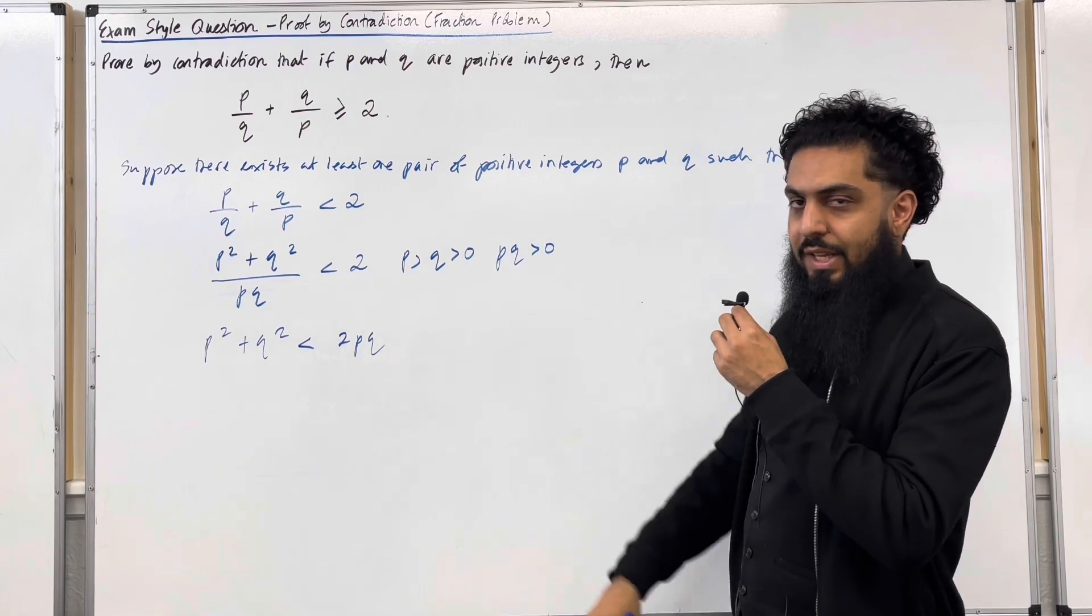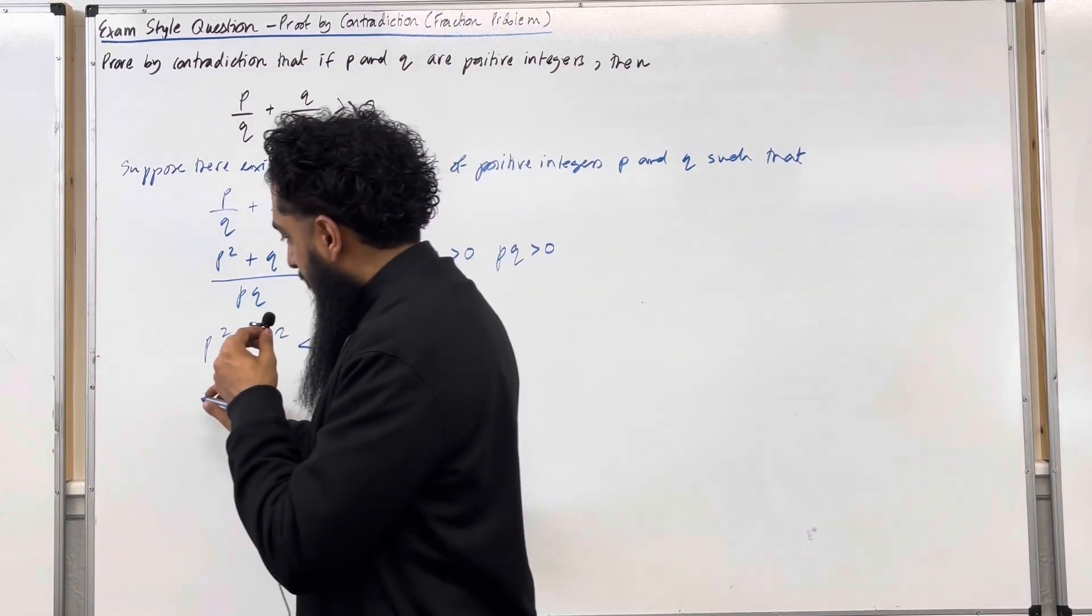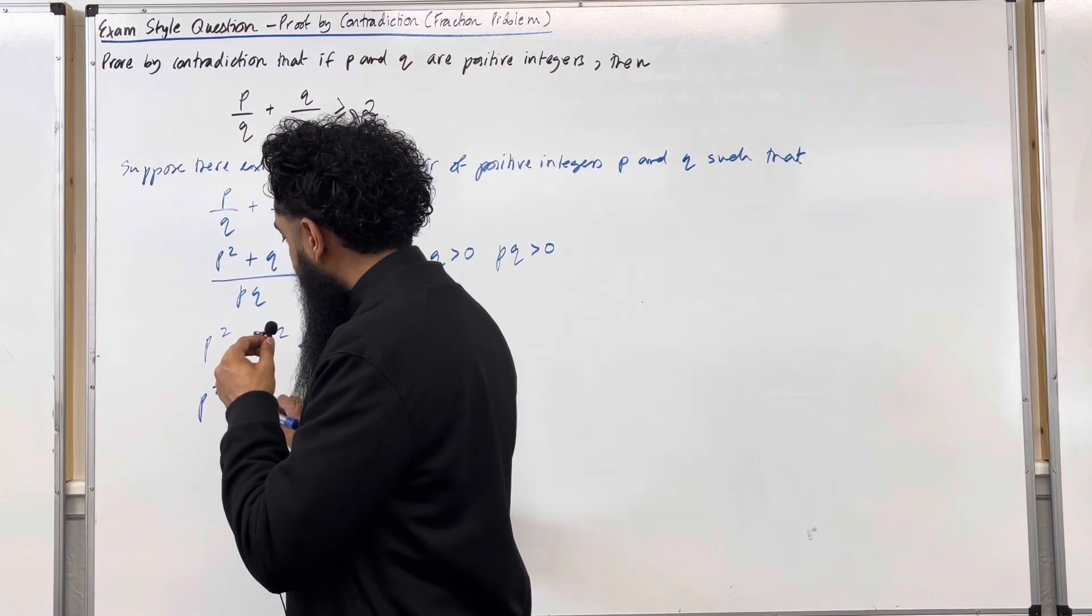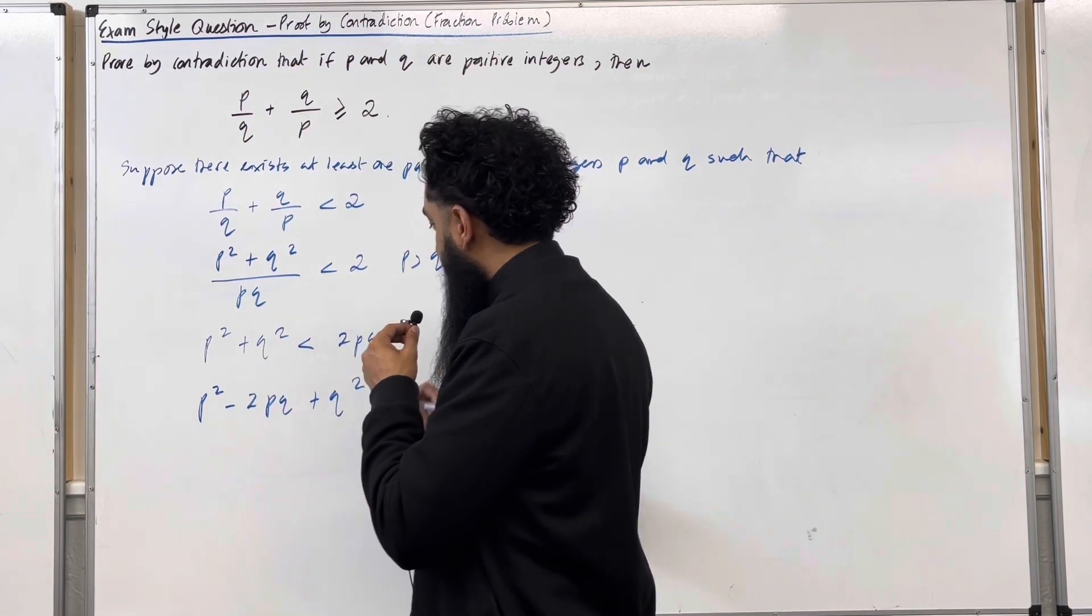Now I'm going to take everything to the left-hand side. So I've got p squared minus 2pq plus q squared is less than 0.